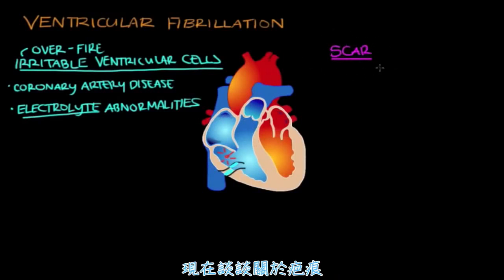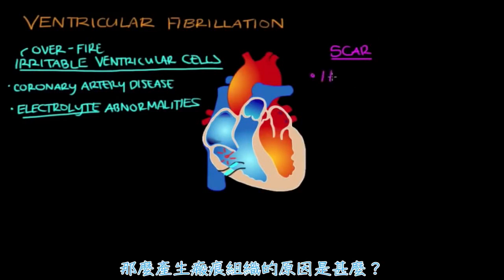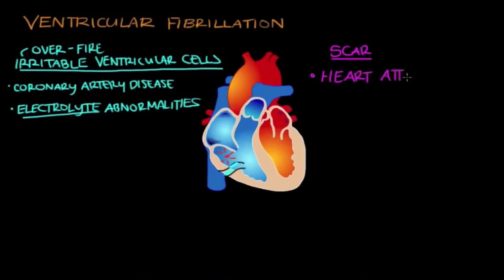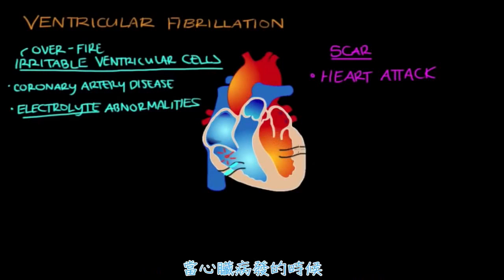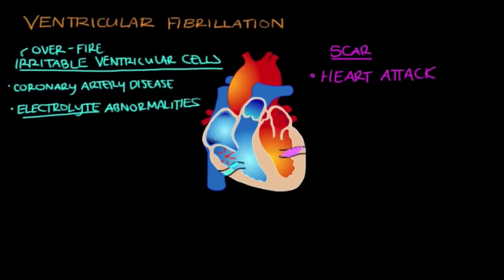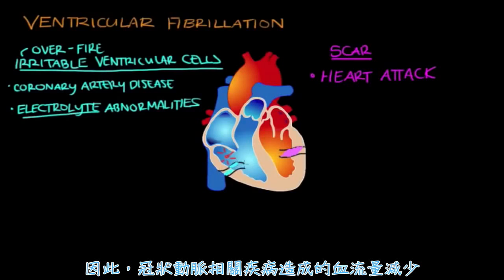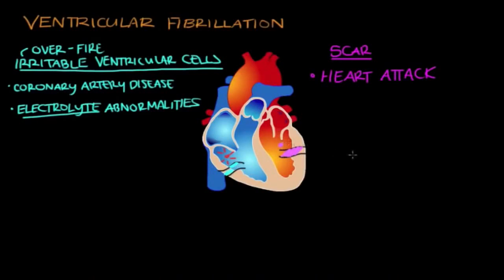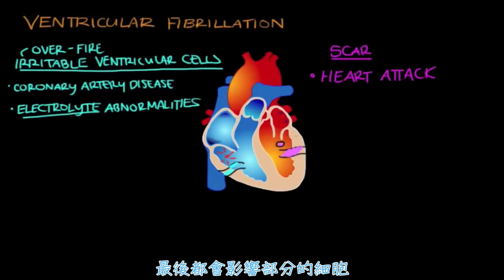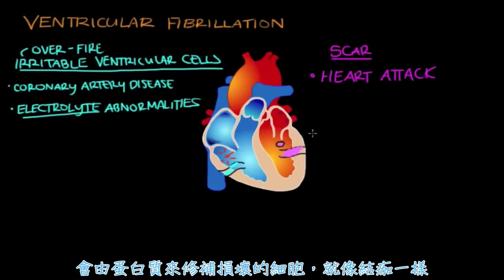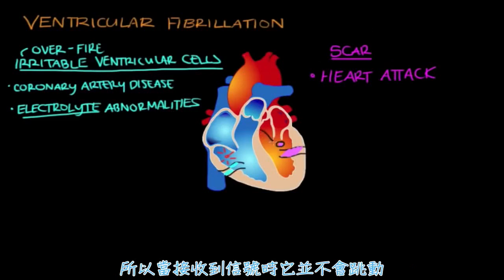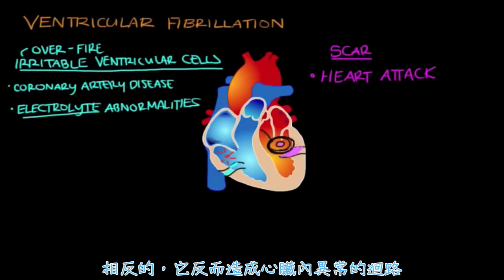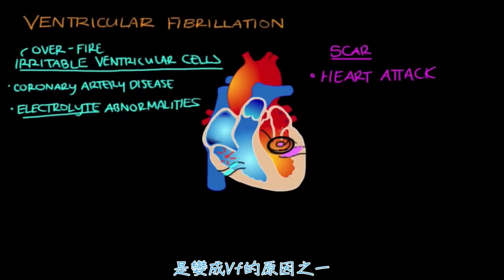Now for scar tissue — scar tissue can also set the heart up for ventricular fibrillation. The most classic cause is a heart attack. Coronary arteries supply the heart with oxygenated blood, and in a heart attack, one gets completely clogged so no blood reaches part of the heart. Whereas coronary artery disease means less blood flow, a heart attack means no blood flow to that area. That tissue ends up dying and is replaced by protein — like a scab — creating scar tissue. Scar tissue doesn't conduct signals like normal heart tissue; instead it sets up abnormal firing and abnormal circuits, which can trigger V-fib.